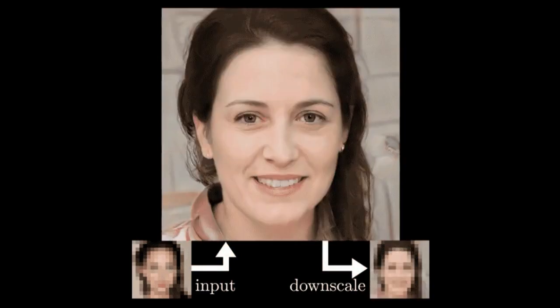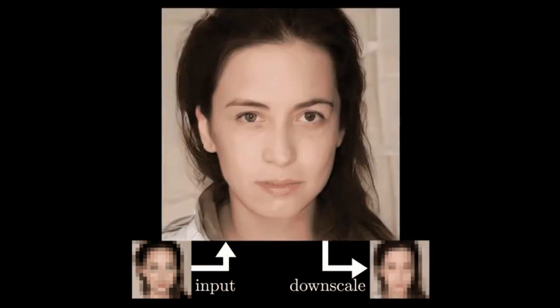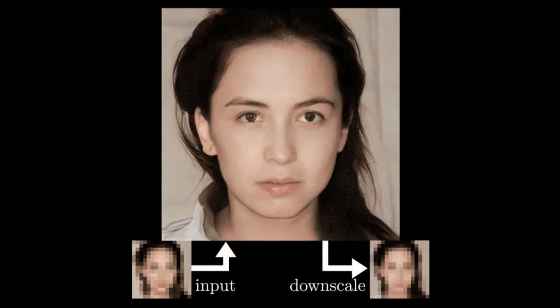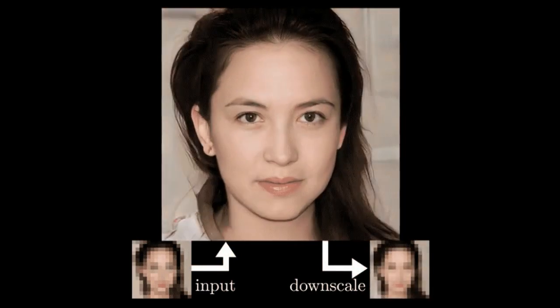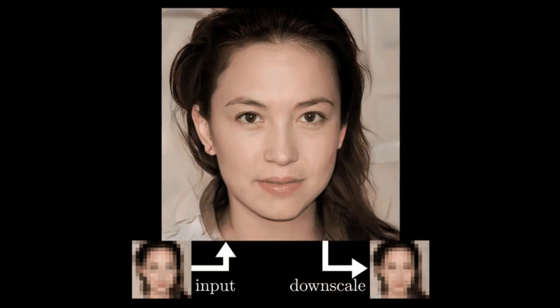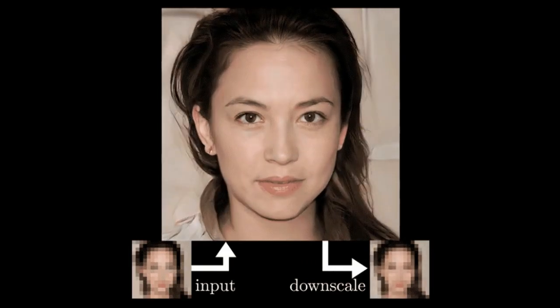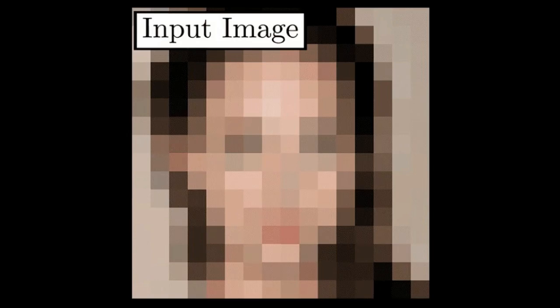The other network takes this output and decides if it is convincing enough to be mistaken for the real thing. The first network gets better and better with experience, until the second network can't tell the difference.